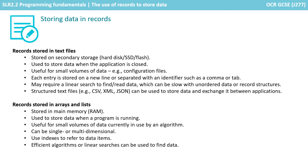Let's recap what we've gone over in this video. First, records stored in simple text files: we store the data on secondary storage such as a hard disk, and it's used to store data permanently when the application is closed. This is useful for small volumes of data like game configuration files. Each entry in the text file is stored on a new line or separated with an identifier like a comma or tab. It can require a linear search to find the data, which is slow. It's useful for structured text files like CSV.